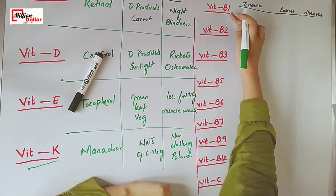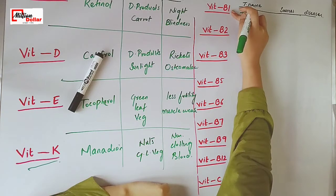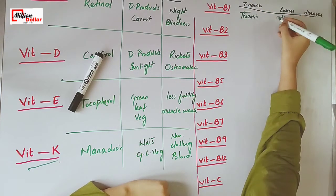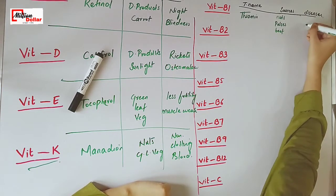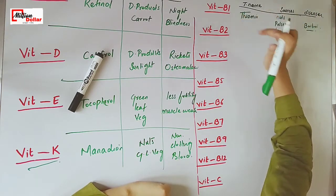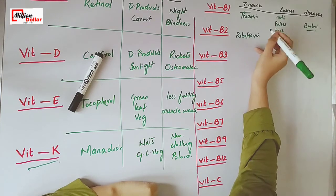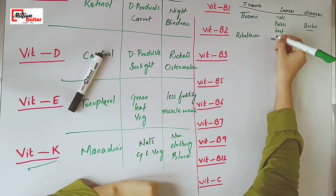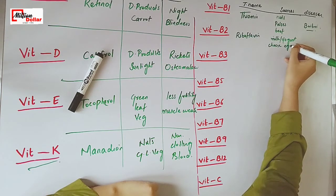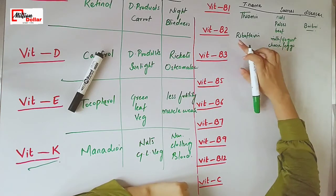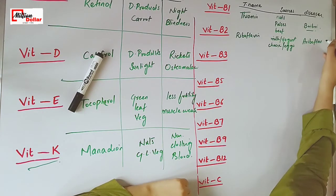The technical name of vitamin B1 is thiamine. The technical name of vitamin B2 is riboflavin. The sources of vitamin B2 are milk, yogurt, cheese, and eggs. The disease caused by the deficiency of vitamin B2 is ariboflavinosis.